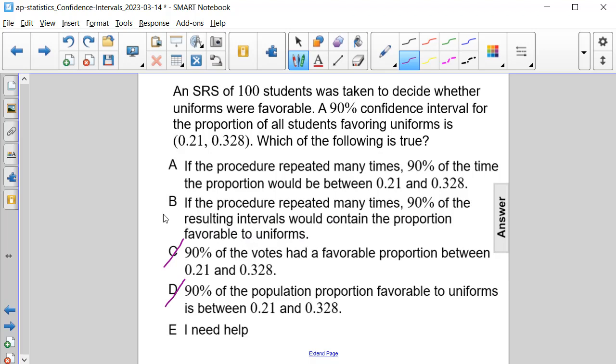Well, the answer here is definitely B. Again, because of the definition of what confidence intervals produce. When the procedure is repeated many times, we would get different intervals. And with 90% accuracy, that means that 90% of the resulting intervals that we would get in our results would contain the proportion favorable to uniforms. So the answer here is B.